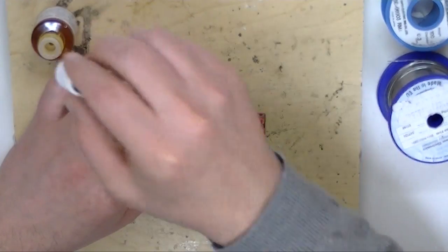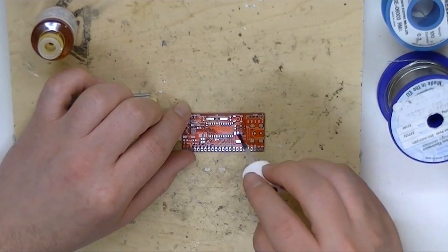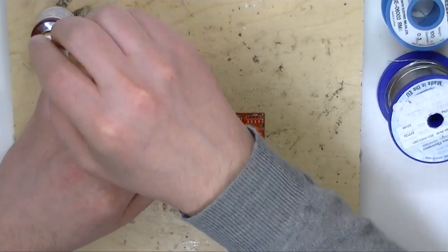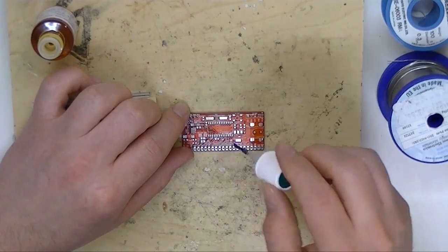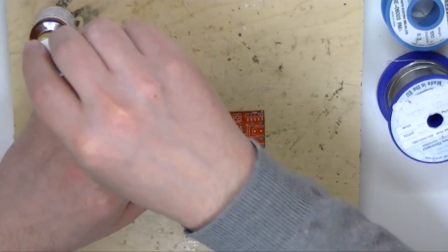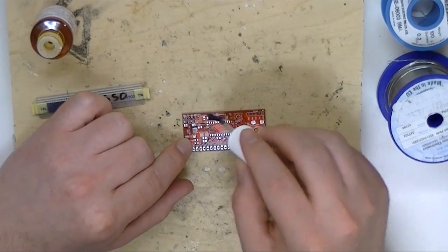I'm not sure how much is needed. I haven't used this a lot yet. With the other flux, I usually gob on loads. More the better. But this is a liquid, so it's a little harder to do that. I'm just going to put on an even layer and see where that takes us.